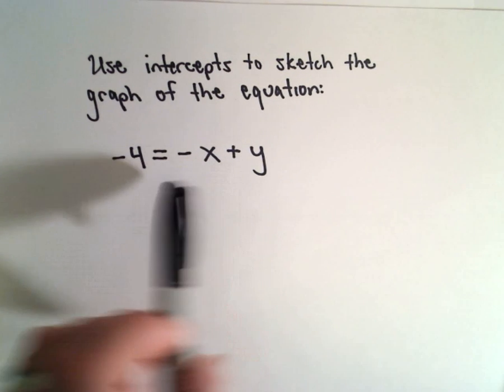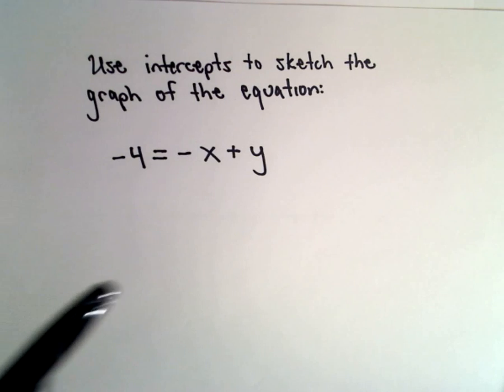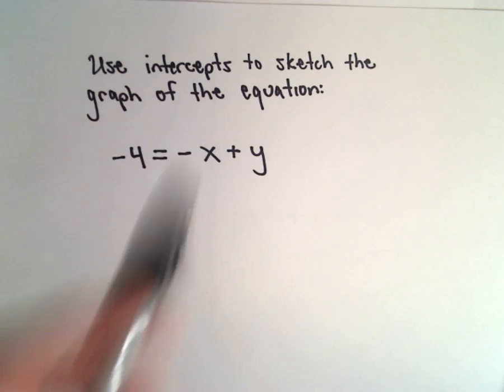So to graph this, all we need are two points, and those two points that we're going to find will be the intercepts.